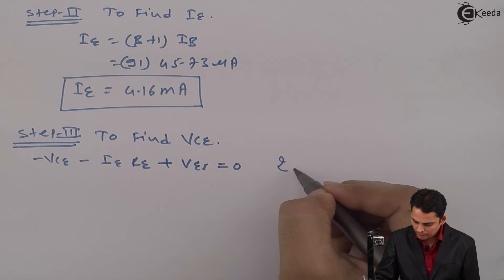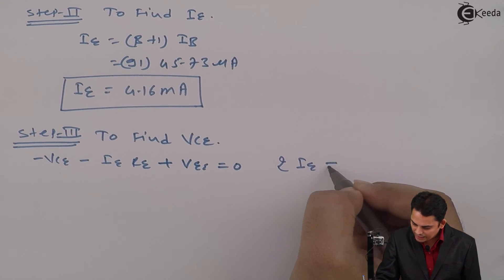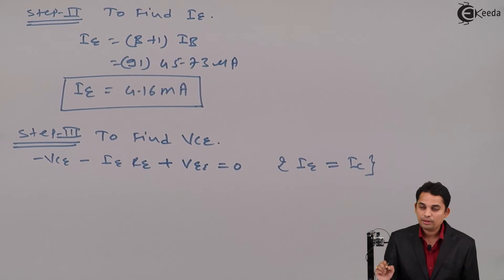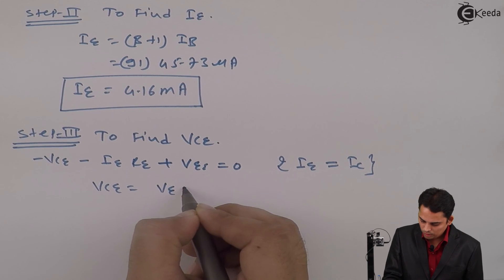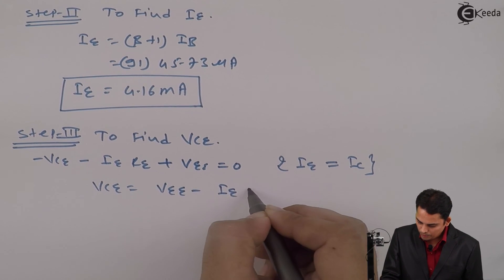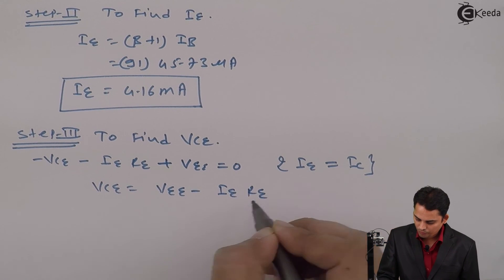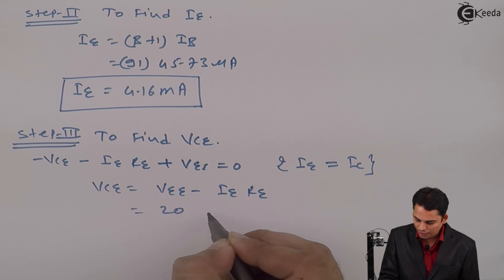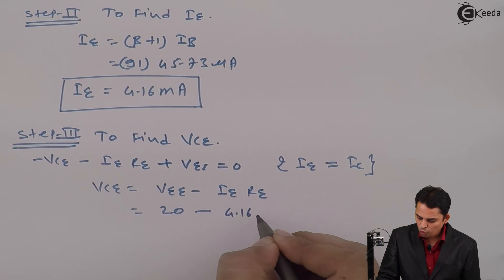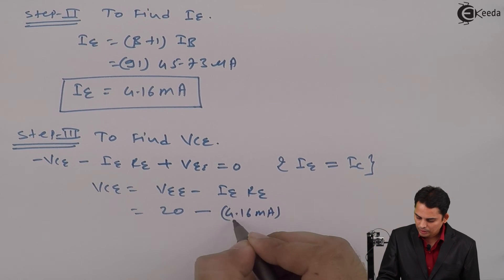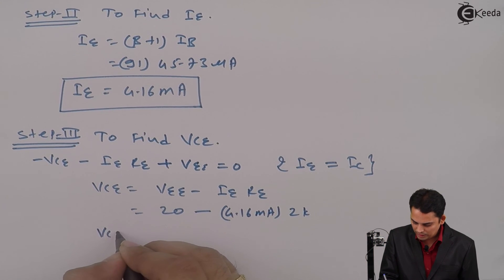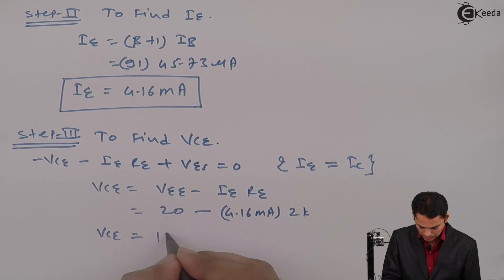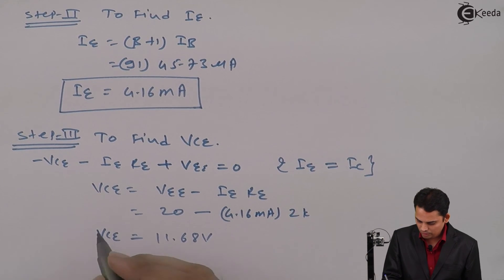Now VCE is equal to VEE minus IE into RE. VCE equals VEE minus 4.16 milli amperes multiplied by RE is equal to 2 kilo ohms and hence VCE is equal to 11.68 volts.